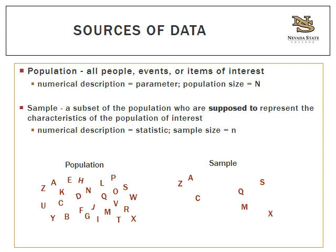You can see in this illustration at the bottom of the slide: the population would be the entire alphabet, and a sample would just be a few letters from that alphabet that I would study, examine, see what's happening, and then try to make assumptions about the original population.